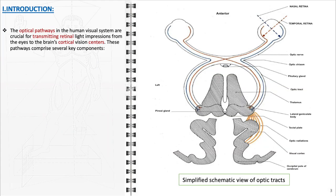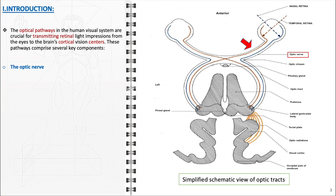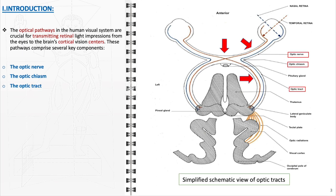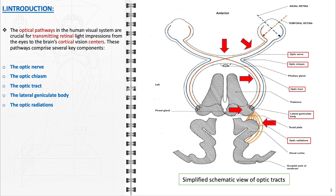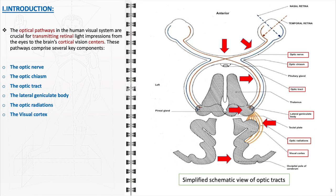Optical pathways in the human visual system encompass a network of structures and neural routes essential for transmitting visual information. These pathways are responsible for transmitting retinal light impressions from the eyes to the brain's cortical vision centers. They are composed of a series of interconnected components, each with a distinct function. The journey of visual information begins at the optic nerve, continues through the optic chiasm, traverses the optic tract, passes the lateral geniculate body, moves along the optic radiations, and culminates in the visual cortex.